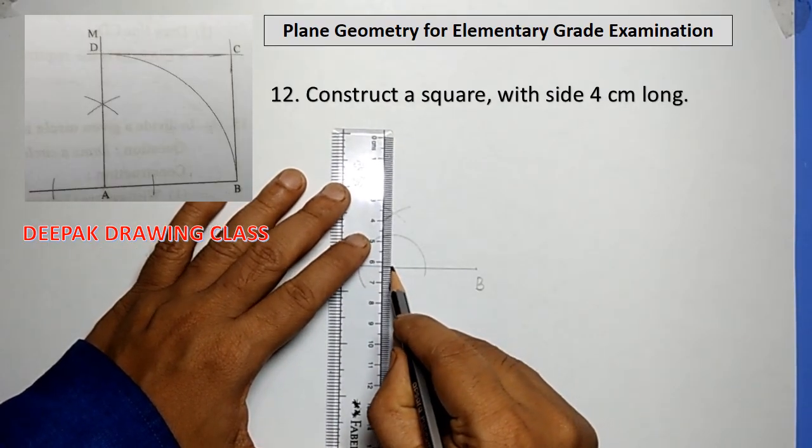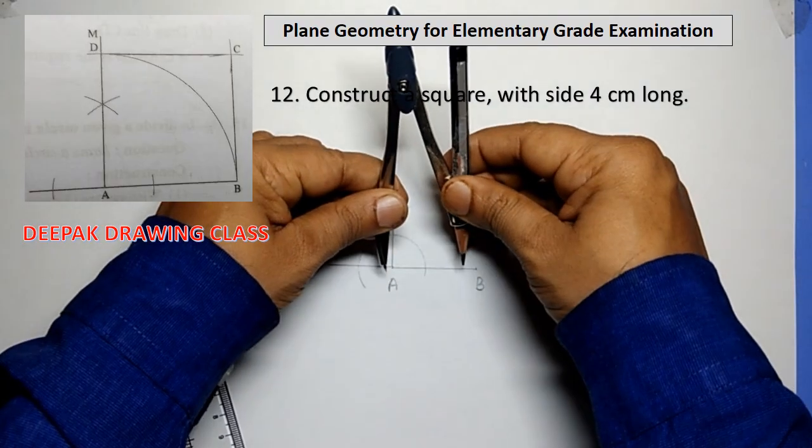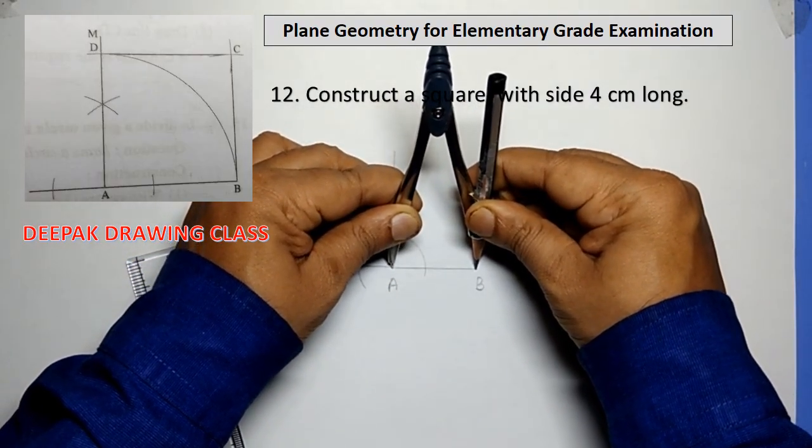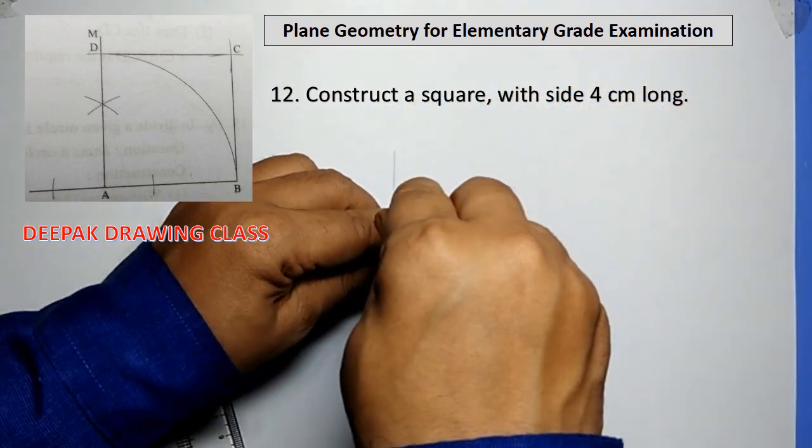Now, join the point A with the arc by drawing a line passing through it. Name it as point M, that is a perpendicular AM to line AB from point A.